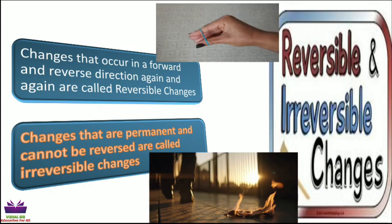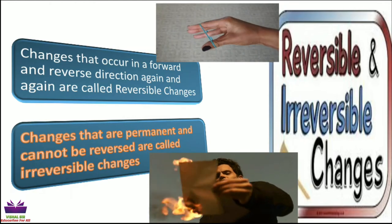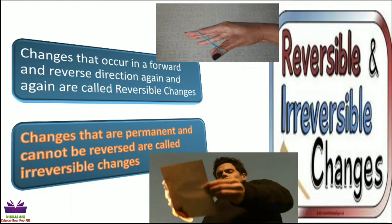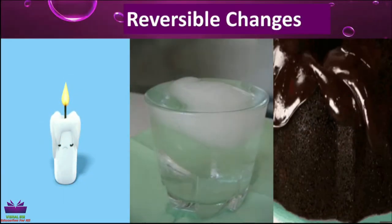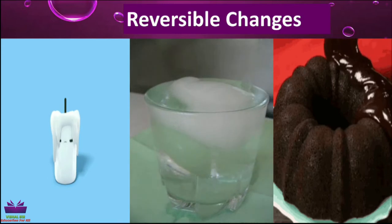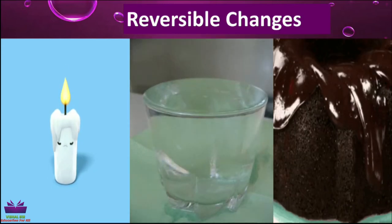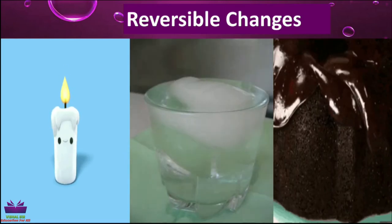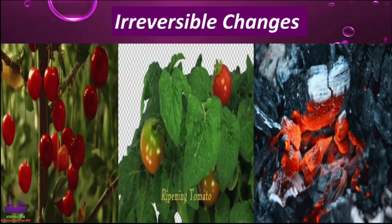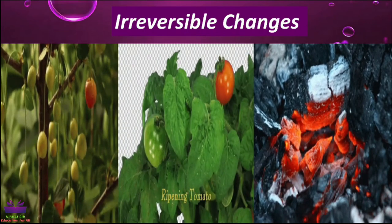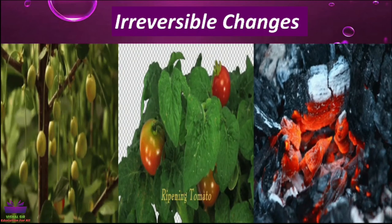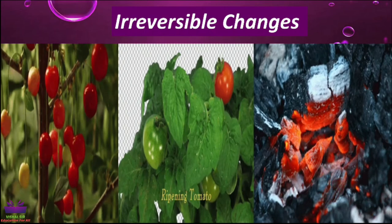For example, when you burn a piece of paper, it turns into ash — you can't get your paper back, so this is an example of an irreversible change. More examples of reversible changes are melting of wax, melting of ice cubes, and melting of chocolate. Examples of irreversible changes include ripening of fruits — like the cherry and the tomato — and wood that is burned turning into ash.